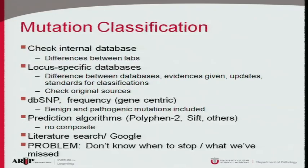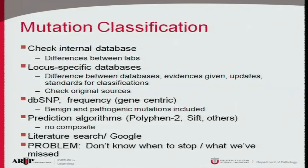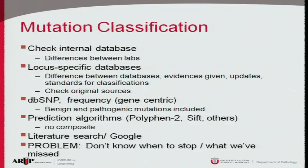We really do need to check original sources. I once pulled up a mutation reported in a paper and found it was actually identified in the control population, not the disease population, yet it was labeled pathogenic in the database. We look at dbSNP mainly for frequency, though we have to be cautious because both pathogenic and benign variants exist in dbSNP.